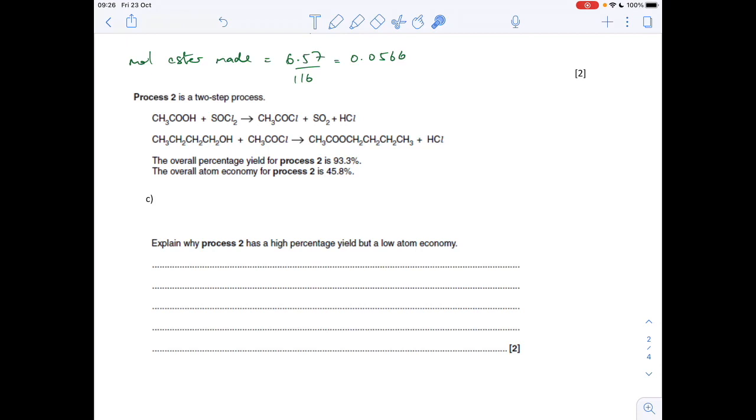The atom economy for process two is lower. Because remember we're trying to make this product here. We're making lots of waste products as well. So that's dropping the atom economy.